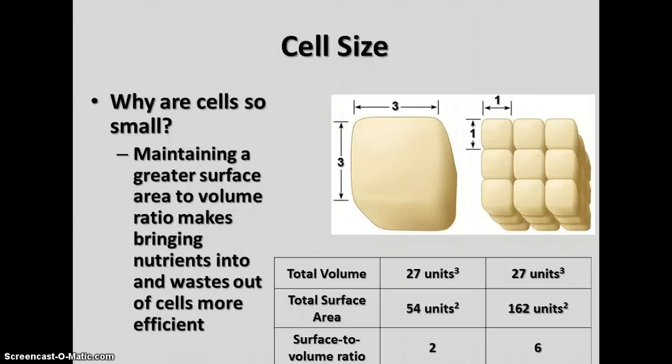Cells are very small, and they need to remain small because that allows them to more efficiently move nutrients in and waste out of the cell. The cell's ability to do this is related to the surface area to volume ratio — the bigger the surface area compared to the volume, the more efficiently the cells can work. We'll discuss this more when covering cell division, but it's important to understand that cells need to remain small because they work more efficiently that way.